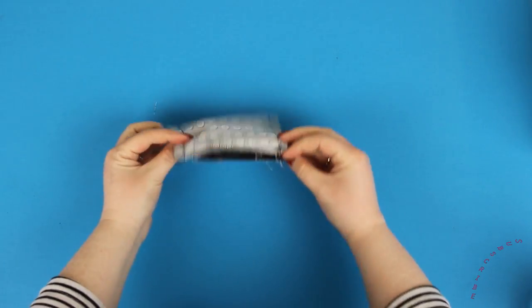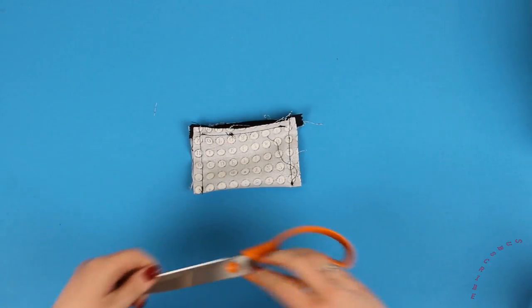Now that you've got that done you're going to want to cut off the excess zip and then trim the corners just to reduce the bulk.